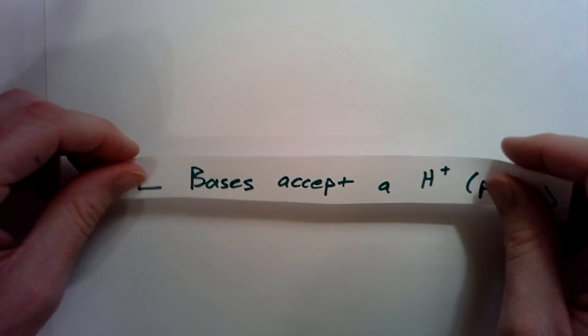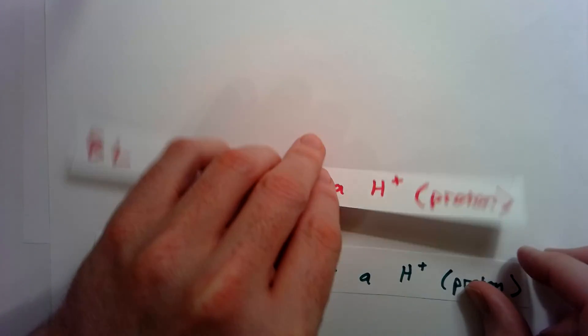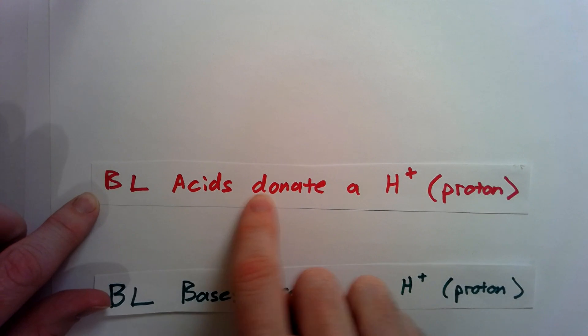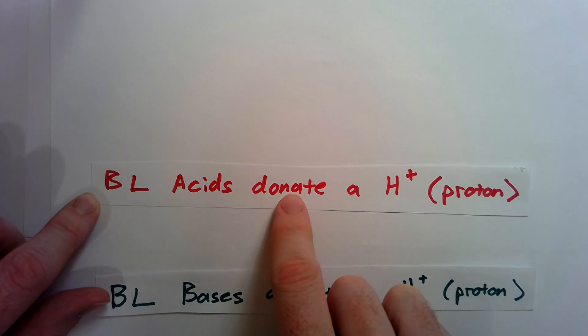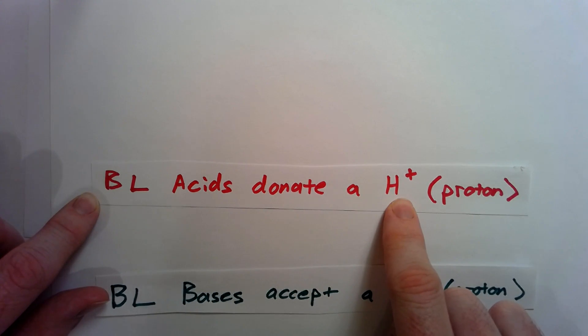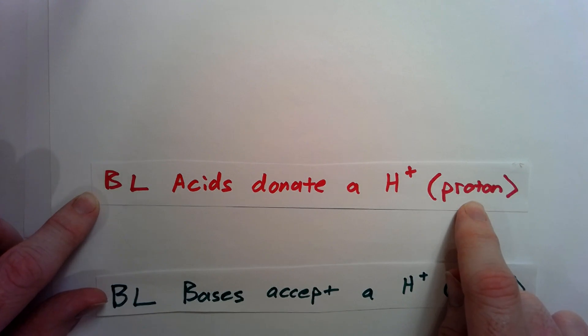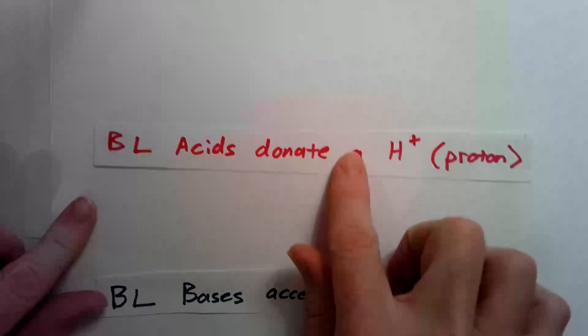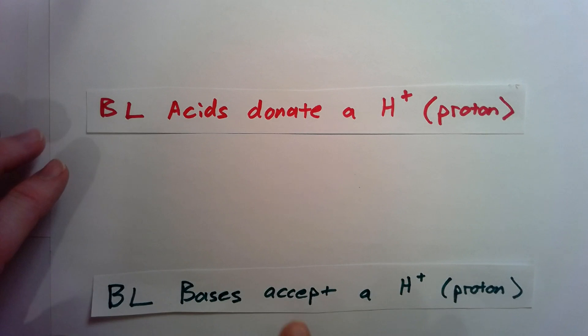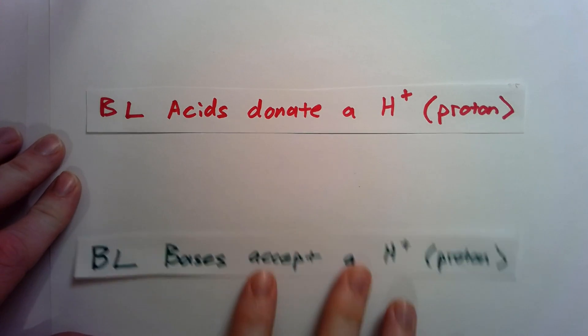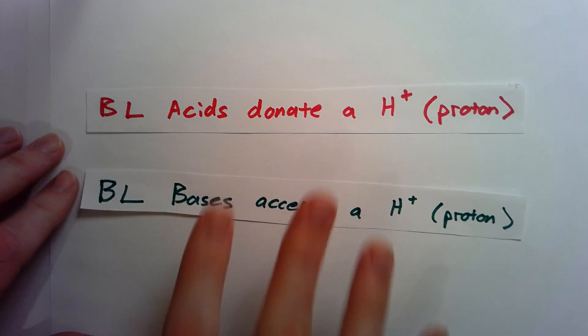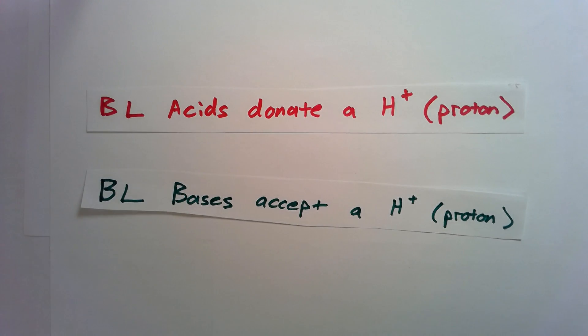A Bronsted-Lowry acid will donate an H+ ion or just a proton, so a lot of times we'll just say it donates a proton. A Bronsted-Lowry base is something that will accept that proton. That is the bare bones definition and you should always keep that in mind.